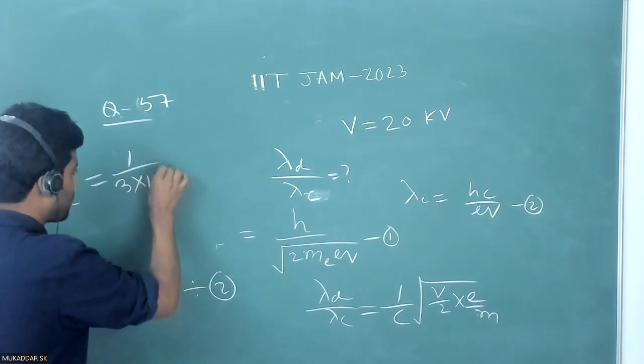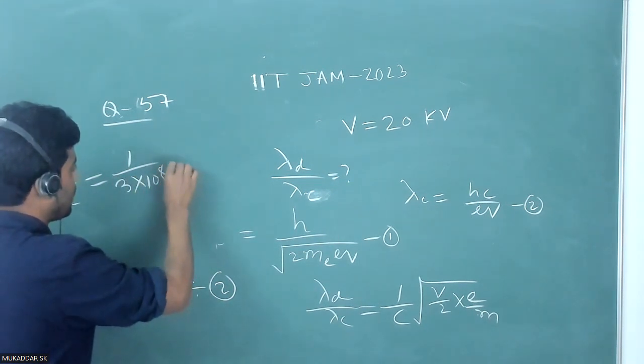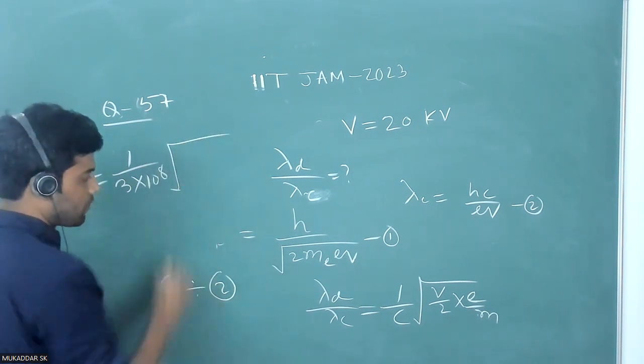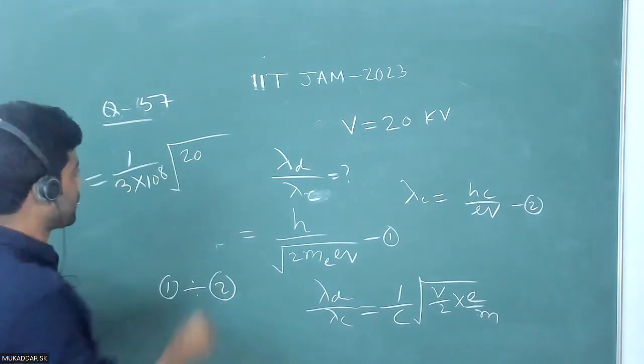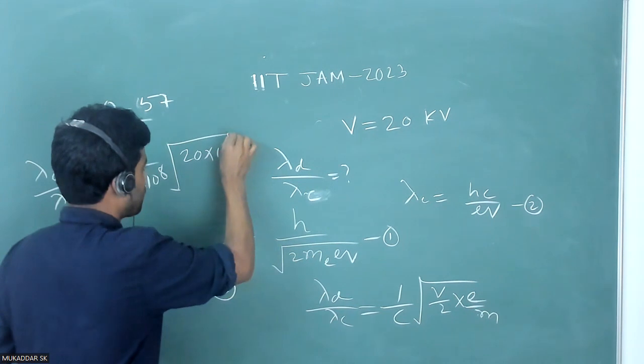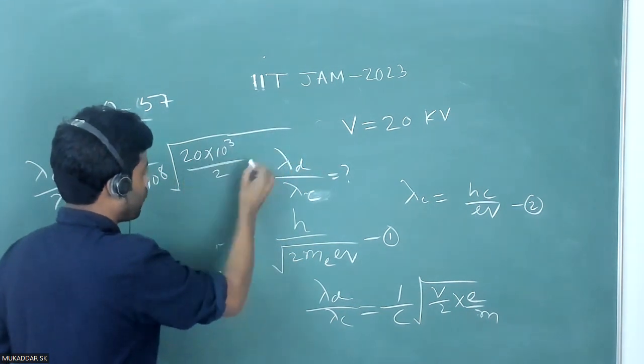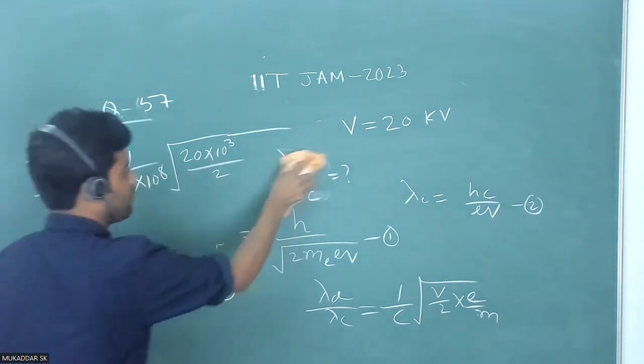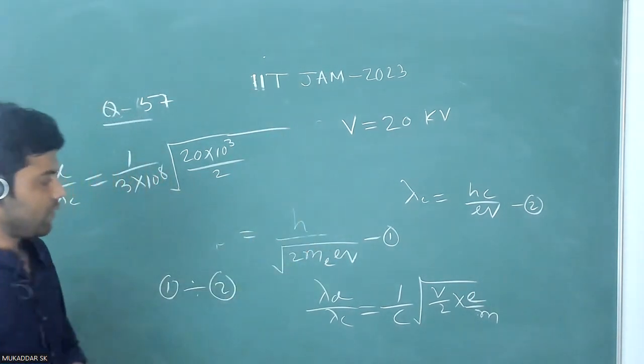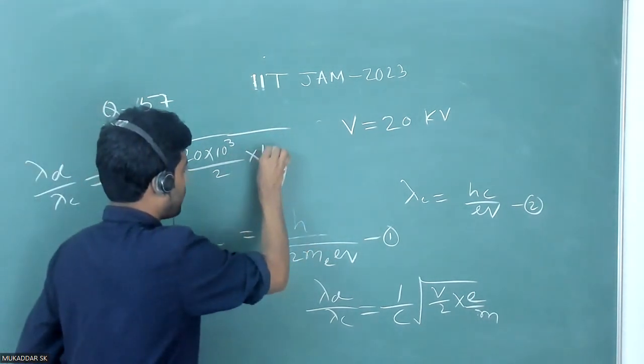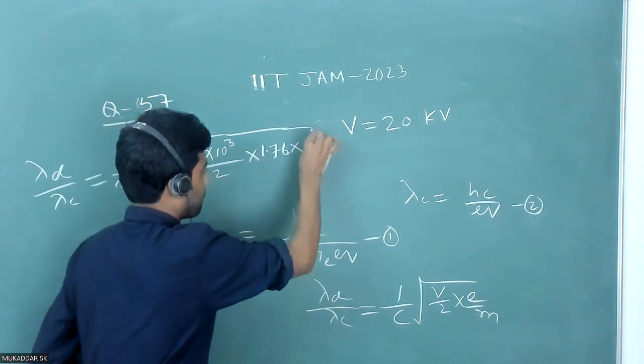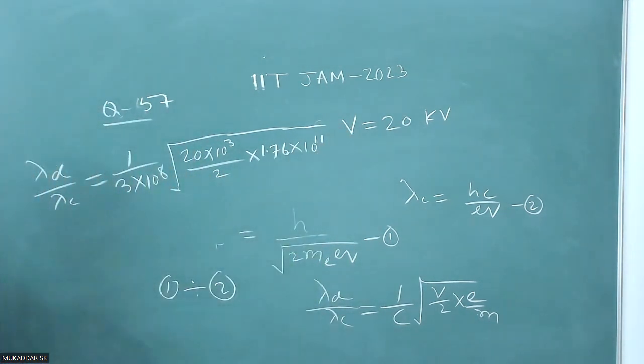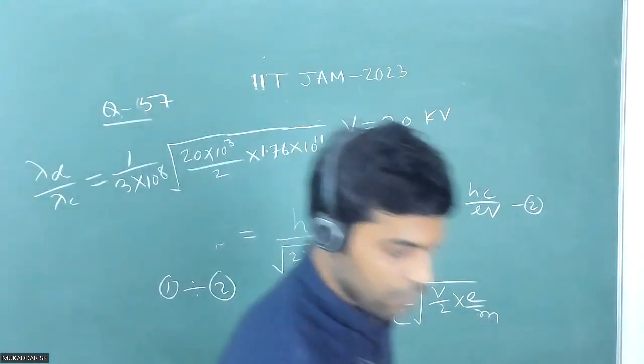Let's substitute the values. c is 3 times 10 to the power 8 in SI units. V is given as 20 kilovolts, so 20 times 10 to the power 3 volts. The e by m ratio is given as 1.76 times 10 to the power 11.